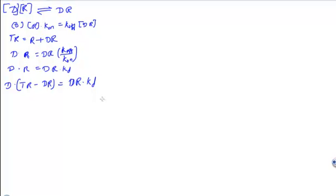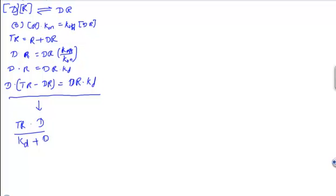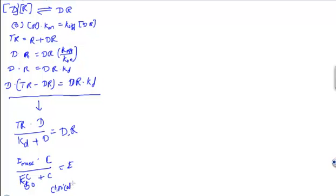Now we will try to linearize this equation. From this equation we deduced that TR times D divided by KD plus D equals DR. TR is total response, also known as Emax. So: Emax times C divided by EC50 plus C equals E. This form is used for clinical response.